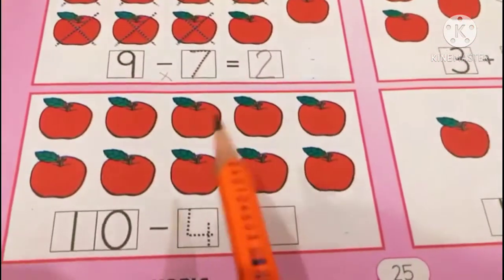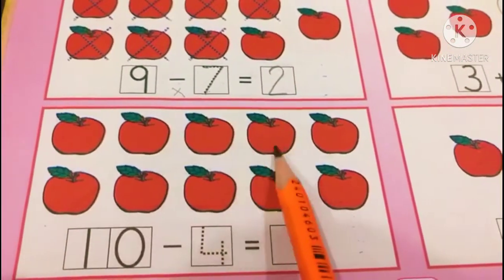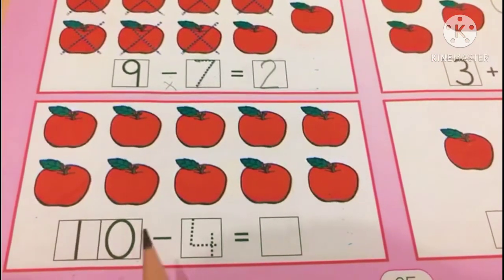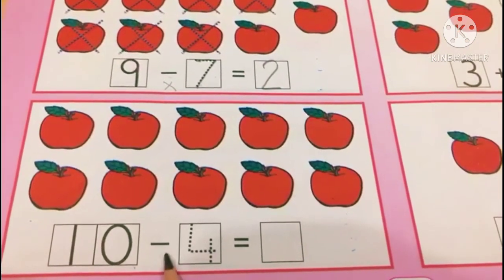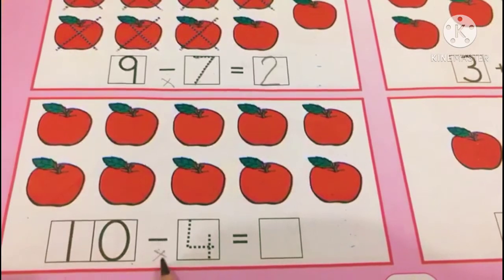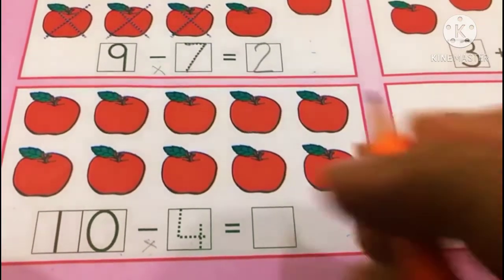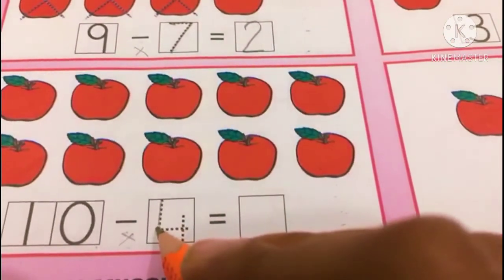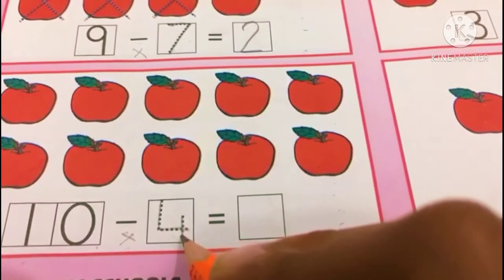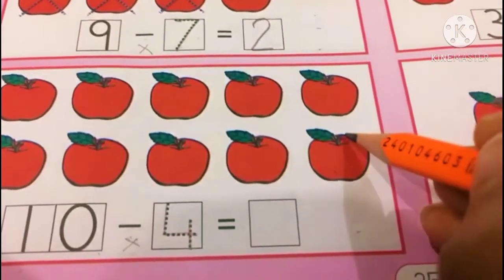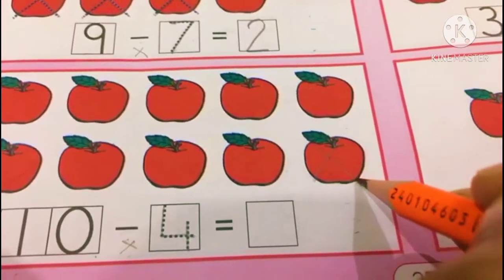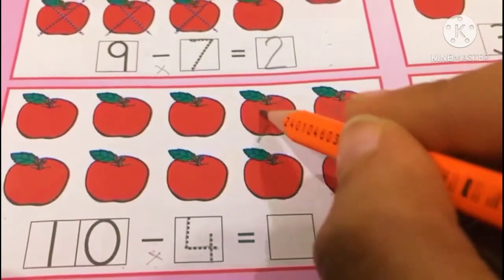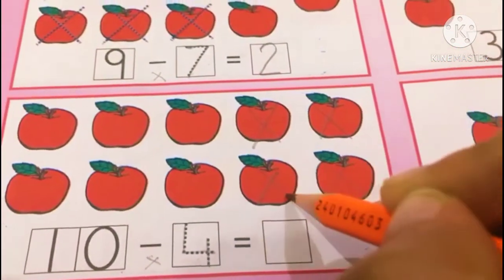Now look at the next box. Count 1, 2, 3, 4, 5, 6, 7, 8, 9, 10. Total are 10. We have to minus means cross. Minus shows that we have to cross 4 apples. Write 4 on dots properly. Join the dots and write 4 in full box. We are going to cross 4 apples. Mark cross on 4 apples. 1, 2, 3, 4.